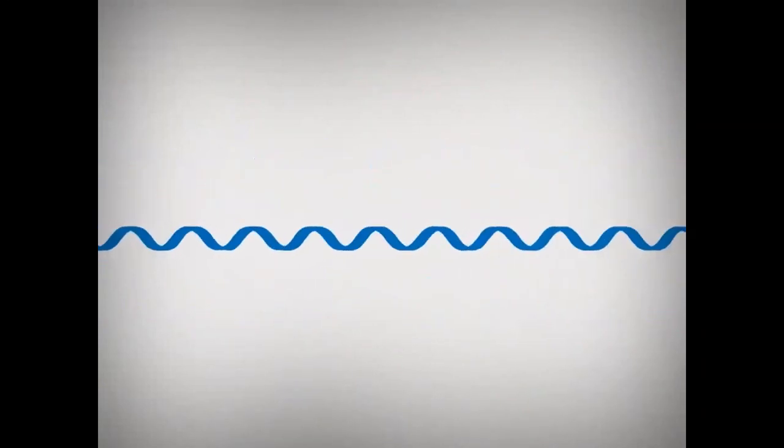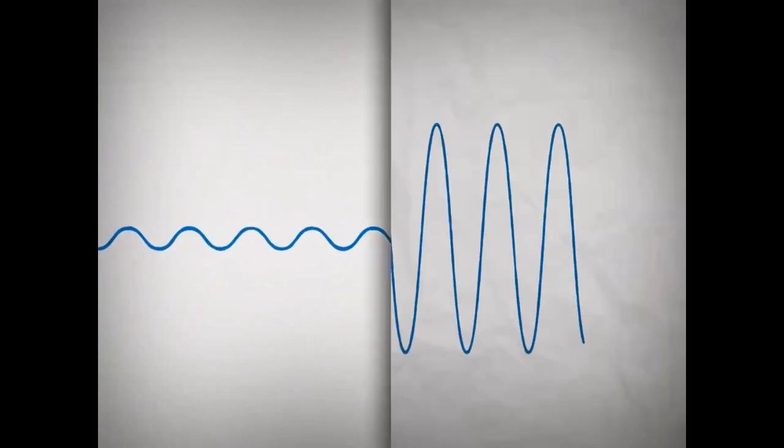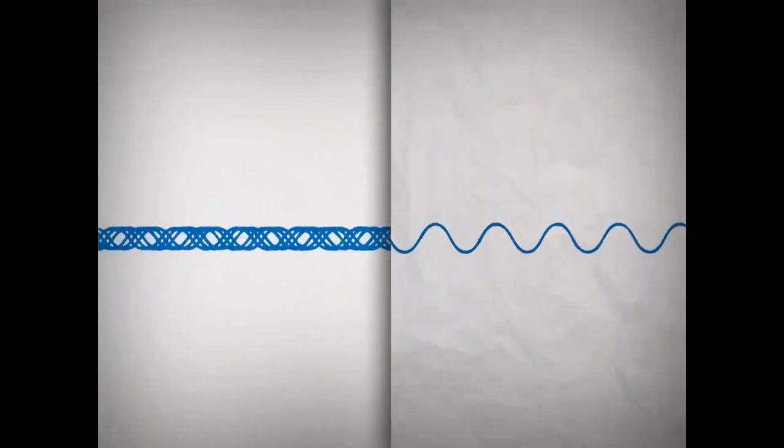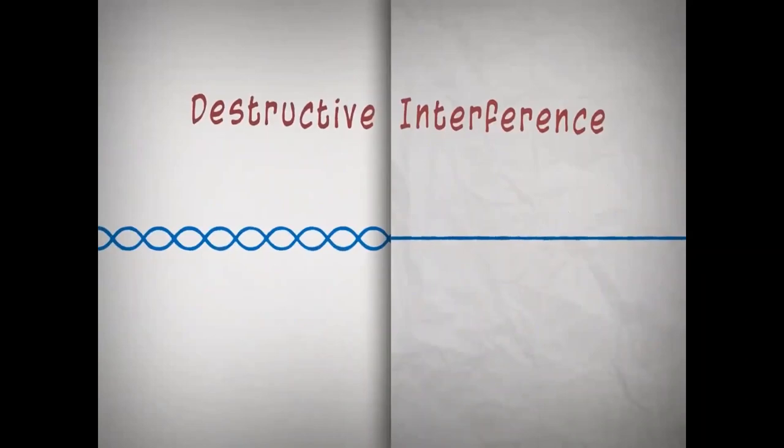Interference occurs when X-rays interact with each other. If the waves are in alignment, the signal is amplified. This is called constructive interference. If the waves are out of alignment, the signal is destroyed. This is called destructive interference.